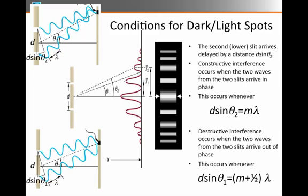And we know that the condition for destructive interference is when that path difference is a multiple of a half wavelength. So we're going to write d sin θ₁ = (m + ½)λ. That's the condition for destructive interference anywhere along the screen.